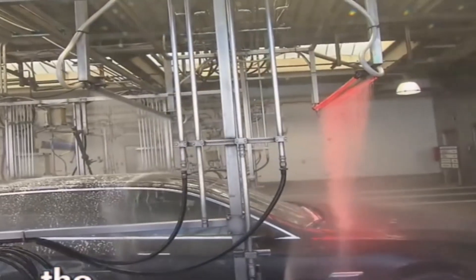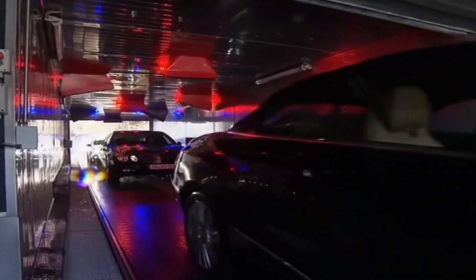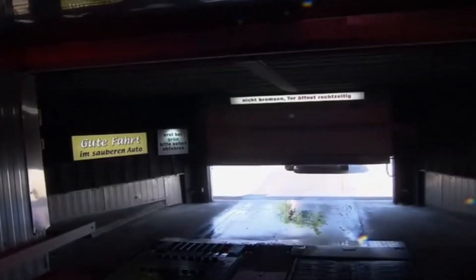After the wash, a drying agent is sprayed to better absorb moisture. Finally, the car enters a drying room. Here, it simulates a wind speed of 90 kilometers per hour, with temperatures reaching 70 degrees. The entire car wash process takes 8 minutes.